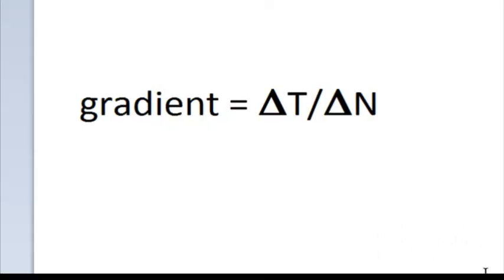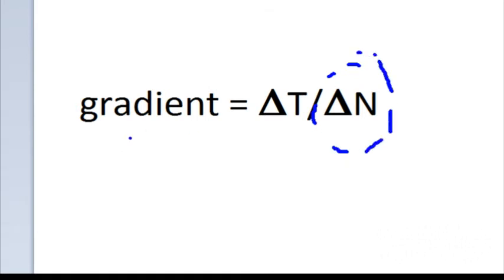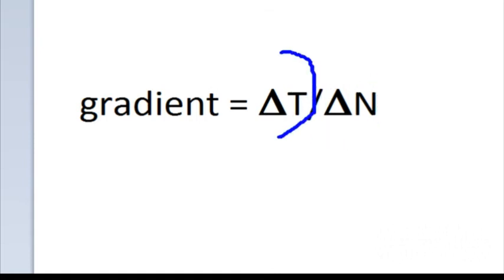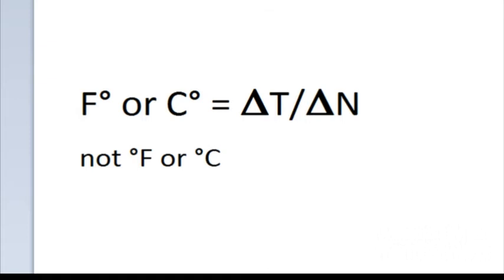In mathematical form, temperature gradient is the change in temperature over the change in distance. If we have a very large temperature contrast over a very small distance, that makes the numerator large and we end up with a large gradient value. Keep in mind that when we deal with gradients we say 'Fahrenheit degrees' or 'Celsius degrees,' not 'degrees Fahrenheit' or 'degrees Celsius.' For example, a difference of 10 degrees across 50 miles — we say 10 Fahrenheit degrees across that distance.